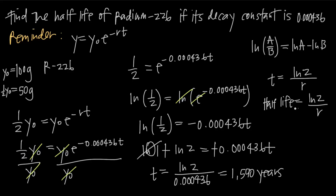The reason this formula always works is that when dealing with half-life, we always start with y sub-zero as the initial amount. Since it's half-life — the time for the substance to decay to half the original amount — we always substitute one-half times y sub-zero for y. No matter the values of r and t, we can always cancel y sub-zero from both sides, leaving one-half equal to e to the negative rt. We then take the natural log of both sides and apply the logarithm law, and since natural log of 1 is always zero, we always get t equals natural log of 2 divided by r.